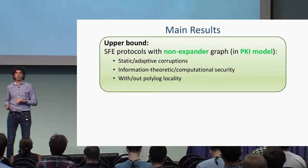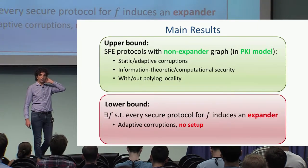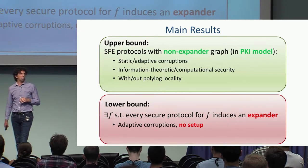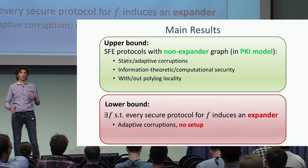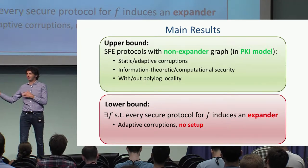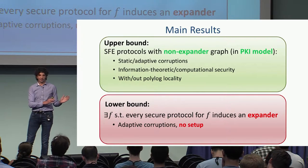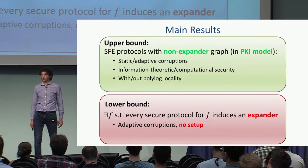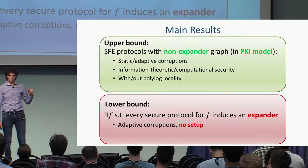On the other hand, we also show a lower bound. In some settings — namely, without setup and with adaptive corruption — there are functions such that any protocol securely realizing them must induce an expander. That's what I'm going to talk about for the rest of the talk: first the upper bound, then a bit on the lower bound.